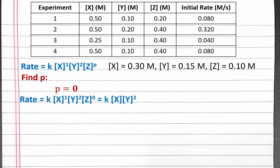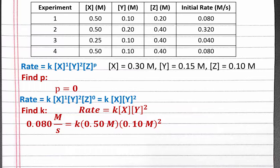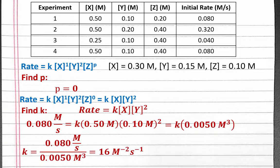Since p equals 0, we can remove it from the rate equation. Our last step is to find the rate constant k. We can do this by choosing any of the rows from our experimental data and substituting the values into our rate equation. I'll choose the data for experiment 1. Plugging in experiment 1, we get 0.080 molar per second equals the rate constant k times 0.050 molar times 0.10 molar squared. Multiplying out the right side, we get k times 0.0050 molar cubed. Solving for k, we get 16 molar to the negative second times seconds to the negative first.